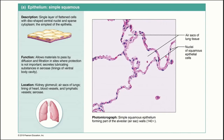We'll start with the simple squamous epithelia. These are a single layer of flattened cells. This is a great epithelium for allowing materials to pass through — great for diffusion and filtration because these cells are so thin. These are primarily found within the glomeruli of the kidney, which is the structure where filtration of the blood occurs.